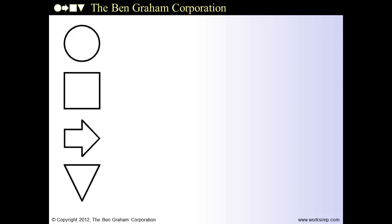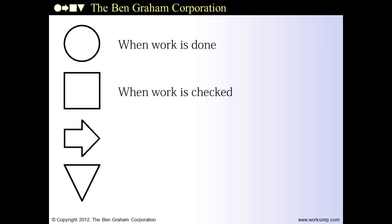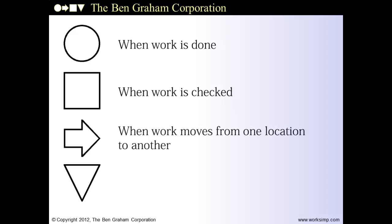The circle represents when work is done — we call it an operation. As a memory cue, think of the circle as an O for operation. The square represents an inspection, checking work to see if it's right. Your memory crutch? The right angles of the square. The arrow represents transportation, when work moves from one location to another. And the triangle represents storage or delay, when nothing is happening to the work.